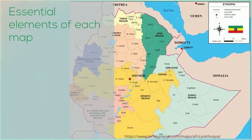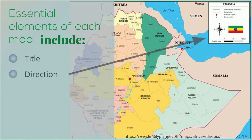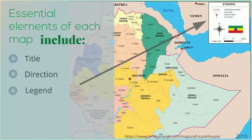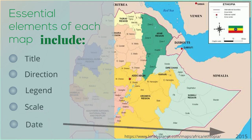The essential elements of any map include the title — what you're looking at — the direction or orientation, which is usually north, a legend that tells you what the symbols on the map mean, a scale to show you distance, and the date the map was created.